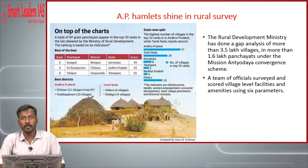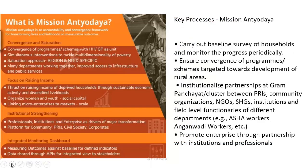The next article is about the recent survey undertaken by the Rural Development Ministry under Mission Antyodaya. Mission Antyodaya is an accountability and convergence framework for transforming lives and livelihoods based on measurable outcomes. It aims at bringing in accountability and convergence of different government units. The broad areas of focus for Mission Antyodaya are: convergence and saturation, focus on raising income in rural areas, institutional strengthening, and an integrated monitoring dashboard.